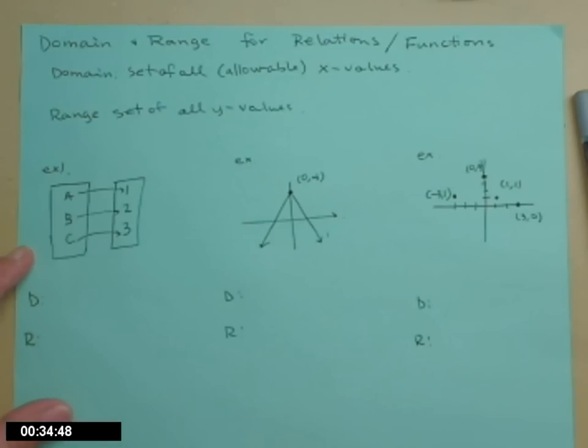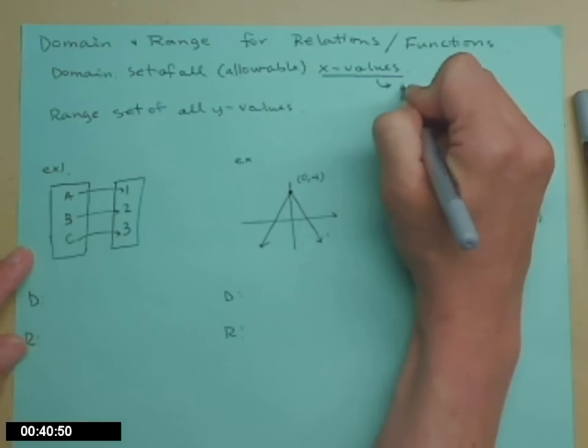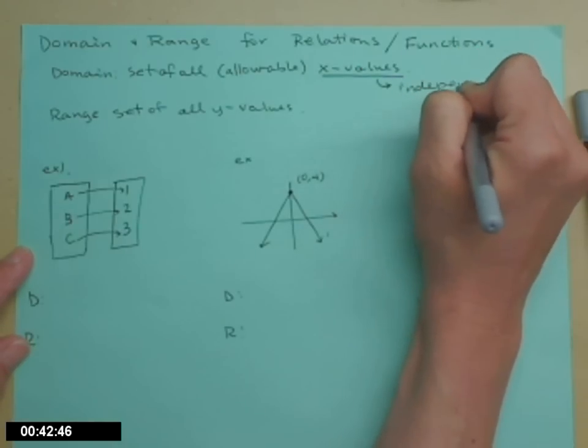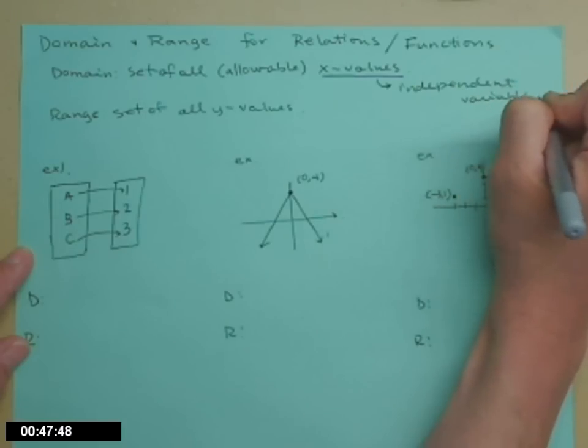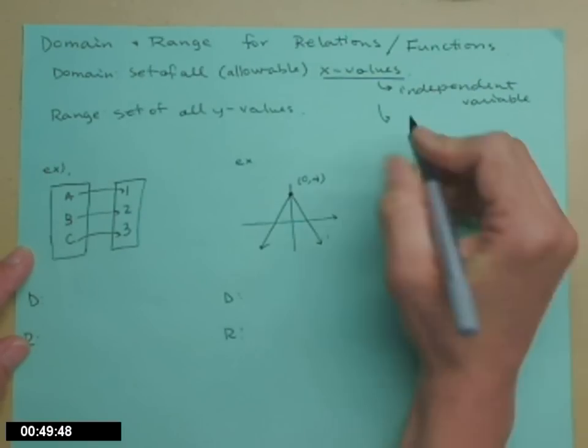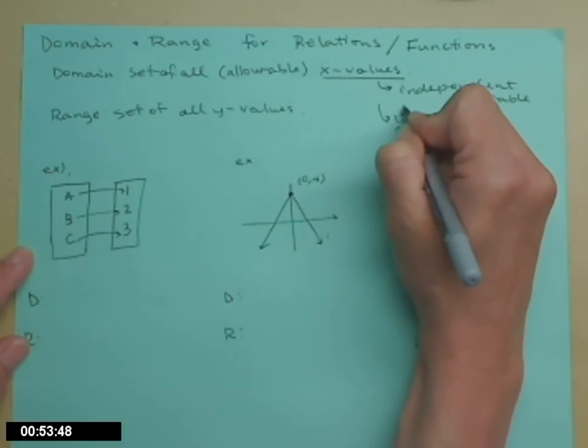So we might not always have x's and y's, so let's give some other definitions here for x values. x values are also called the independent variable, or in the very first part here, it will be the first set.